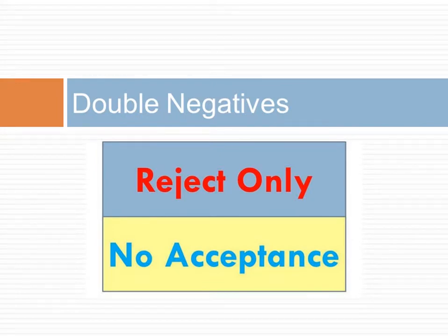In many statistical explanations, we use double negatives. For instance, we might say that the null hypothesis is not implausible, or we fail to reject the null hypothesis. Double negatives are used to communicate that while we are not rejecting a position, we are also not saying it is correct.